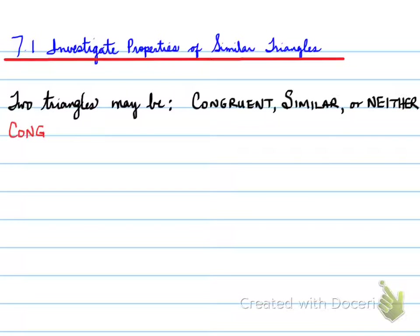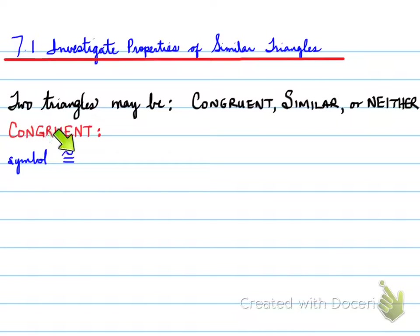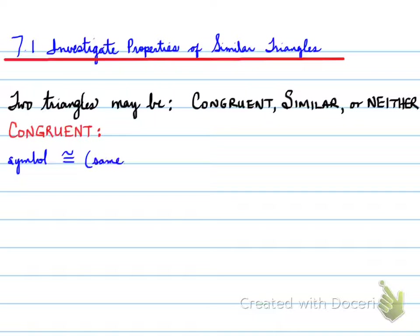Today, we're going to focus on being congruent — on what makes two triangles congruent. First, we need to understand there is a symbol that represents congruent, and this symbol is used around the world. This symbol has a little curly on the top, so it's called a tilde, T-I-L-D-E, and underneath is an equal sign, so this represents congruency. Congruency means that the objects have the same shape and the same size.